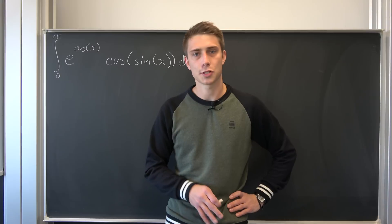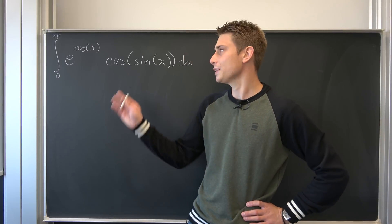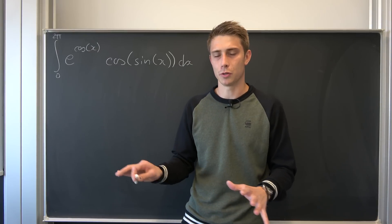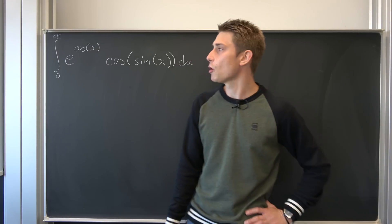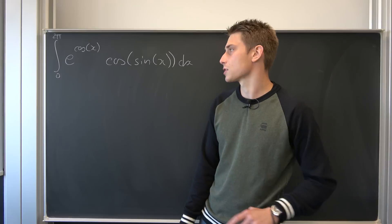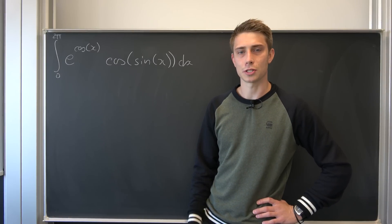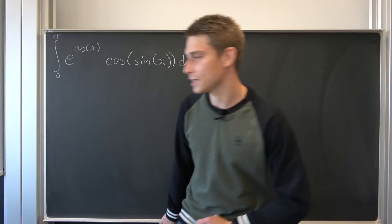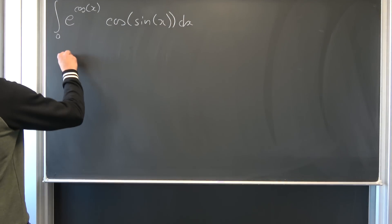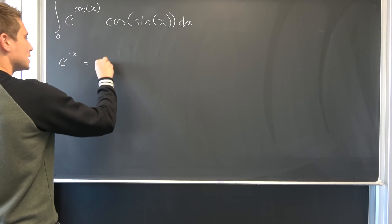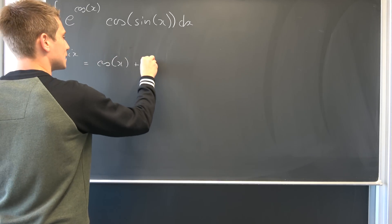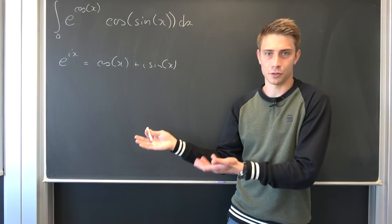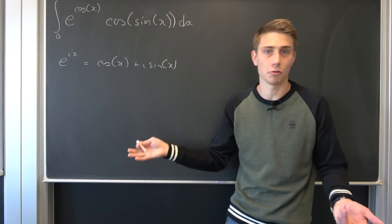This thing was a matter of trial and error because it comes with a few problems in the process. My first immediate thought when I saw this was to introduce the complex exponential function. So we can rewrite e to the i times x as nothing but cosine of x plus i times the sine of x, and this is nothing but a complex function of some sort.